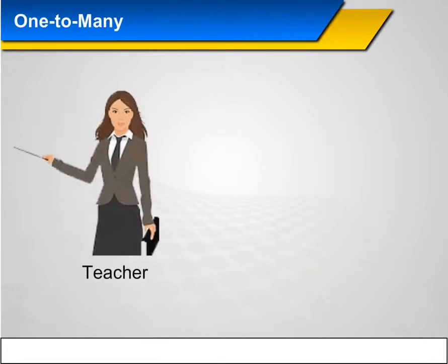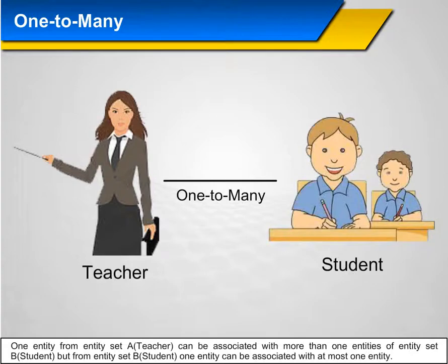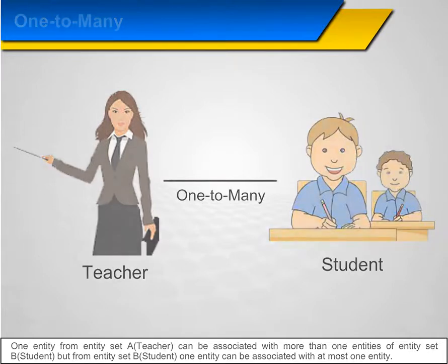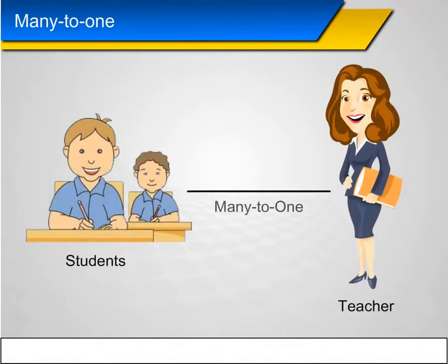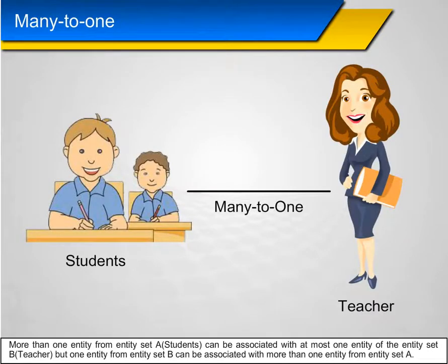One-to-many: One entity from entity set A (e.g., teacher) can be associated with more than one entity of entity set B (e.g., student), but from entity set B, one entity can be associated with at most one entity from entity set A. Many-to-one: More than one entity from entity set A (students) can be associated with at most one entity of entity set B (teacher), but one entity from entity set B can be associated with more than one entity from entity set A.